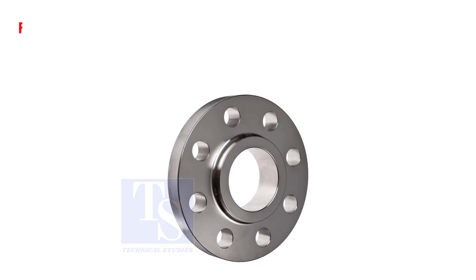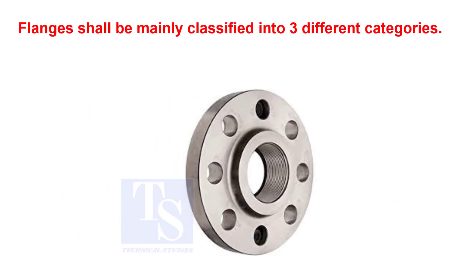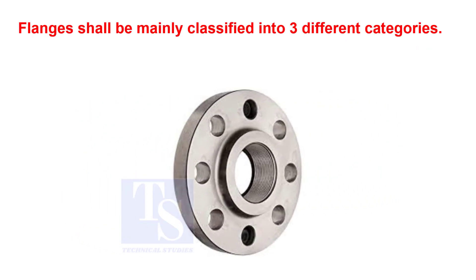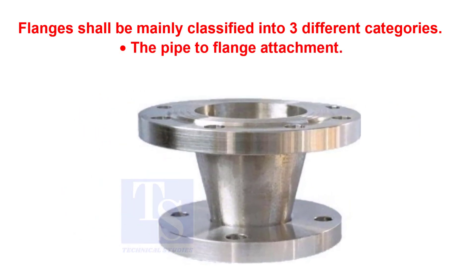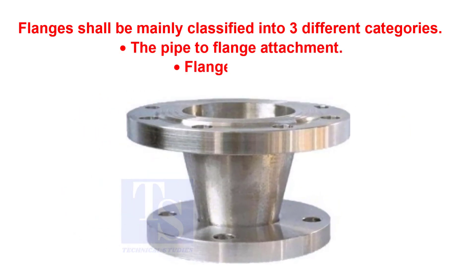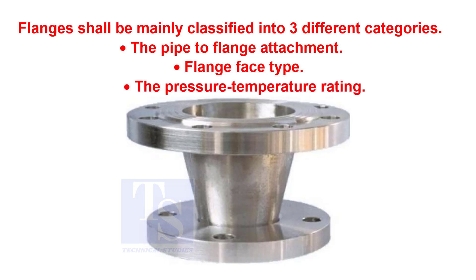Pipe flanges can be mainly classified based on three different categories: the pipe-to-flange attachment, flange face type, and the pressure temperature rating.